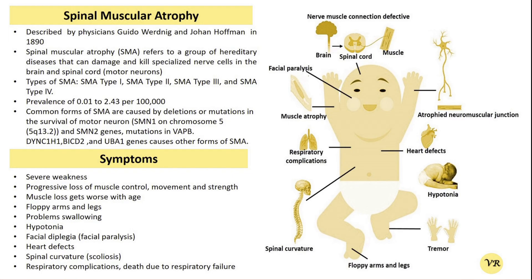Nusinersen has been shown to improve motor function, respiratory function, and survival in children with SMA, particularly in those diagnosed early. Risdiplam is an oral medication that also enhances the production of SMN protein from the SMN2 gene, similar to nusinersen but working in a slightly different manner. Risdiplam is taken as a daily oral dose, which is a more convenient option as it does not require injection.